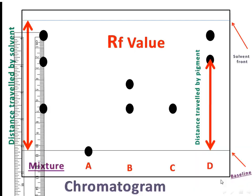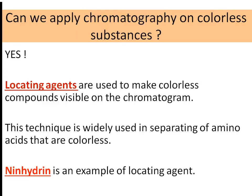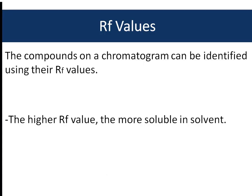Can we apply chromatography to colorless substances? Yes — we use chemical substances called locating agents. Their purpose is to make the colorless chromatogram visible. We spray the locating agent and then place the chromatogram in an oven, which gives color to the spots. Ninhydrin is an example of a locating agent and is used for separating amino acids, which are colorless. Compounds on a chromatogram can be identified using their Rf values, since Rf values are like fingerprints of substances.